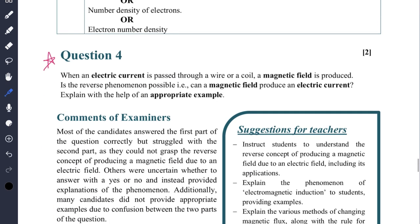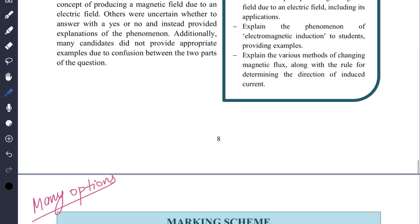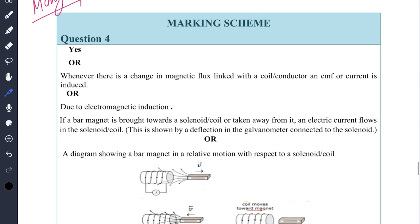Then question number four: when an electric current is passed through a wire or a coil, a magnetic field is produced. Is the reverse phenomenon possible? Explain with the help of an appropriate example. Everybody answered the first part correctly but they could not grasp the reverse concept of producing a magnetic field due to an electric field. If you see the marking scheme here, there are many options available - either you draw the diagram only or you have written the statement. Everybody will be awarded marks.